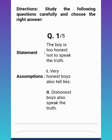The first statement says: the boy is too honest not to speak the truth — meaning the boy is so honest that he can never speak falsely. Assumption one is: very honest boys also tell lies. Assumption two is: dishonest boys also speak the truth. You will decide which assumption is correct.